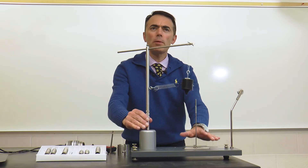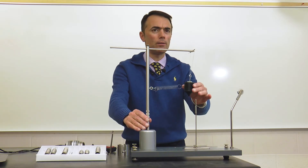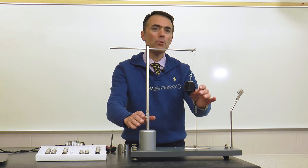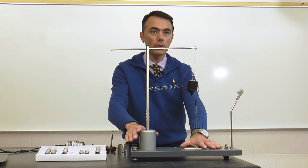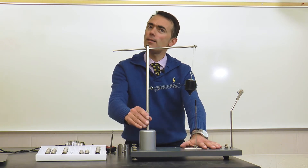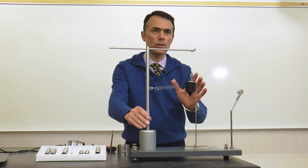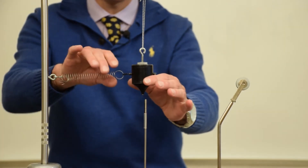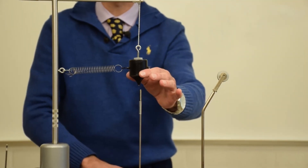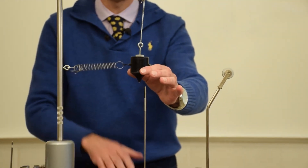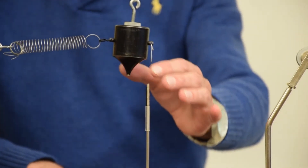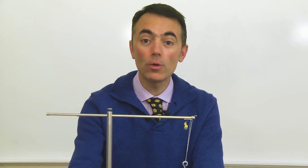Remember that before you take any measurements, you have to make sure the apparatus is level and that it is adjusted so that the bob hangs directly over the indicator when the spring is not on.